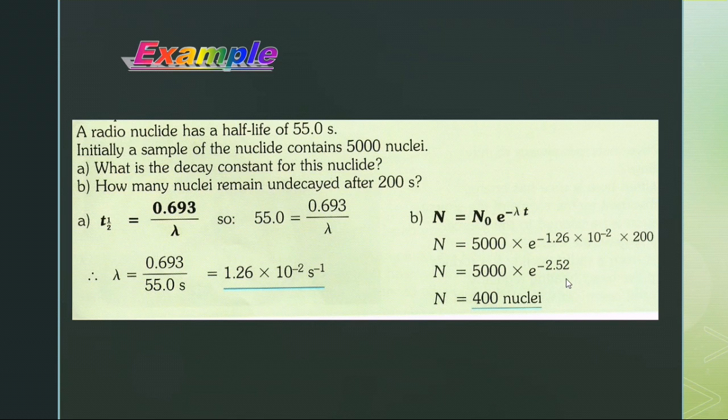First, we use the equation we derived: t½ = 0.693/λ. Substituting the value of t½, we get λ = 0.693/55.0 = 1.26 × 10⁻² s⁻¹.